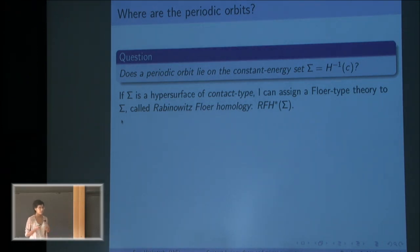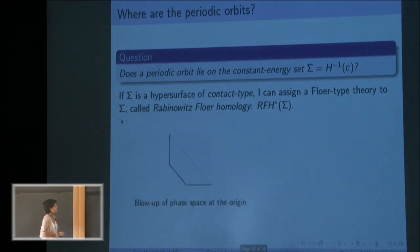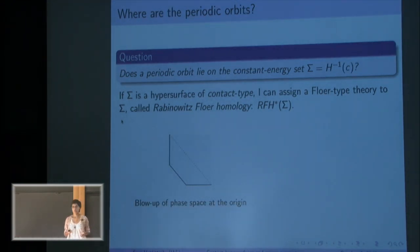Let's talk about the example I'm interested in, which is this blow up of C² at the origin. So what I've done, especially in this picture, I've just taken a copy of C², I've removed the origin and I've glued back in a two sphere.